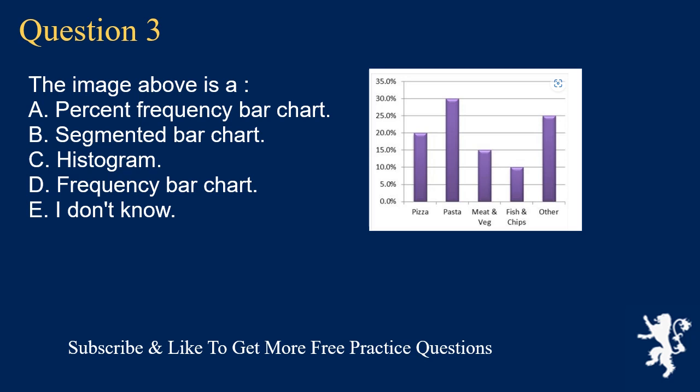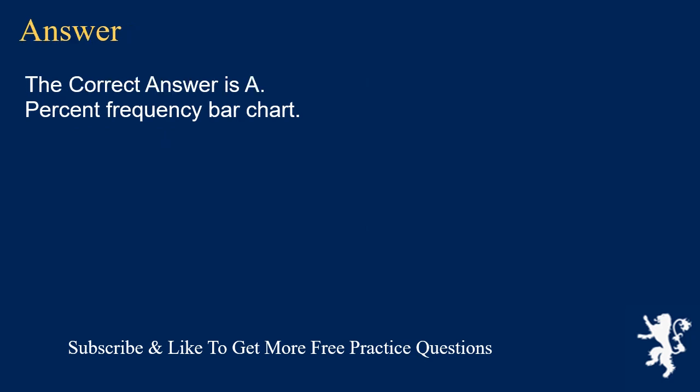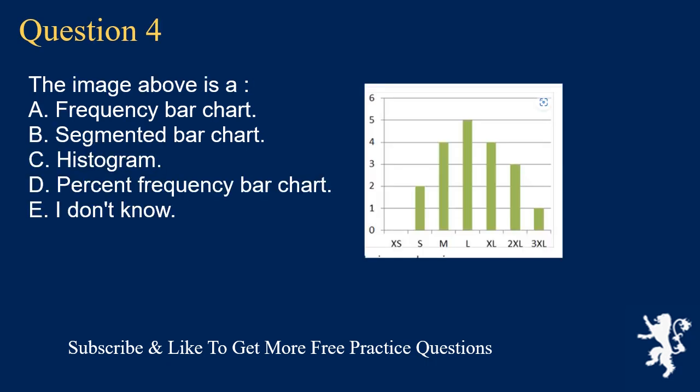Question 3: The image above is A. a percent frequency bar chart, B. segmented bar chart, C. histogram, D. frequency bar chart, E. I don't know. The correct answer is A, percent frequency bar chart.